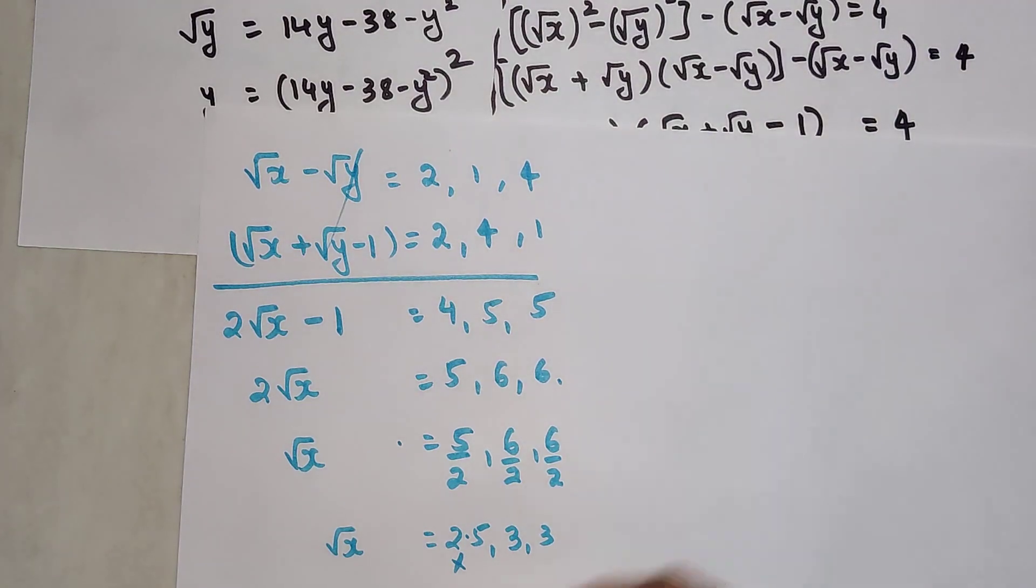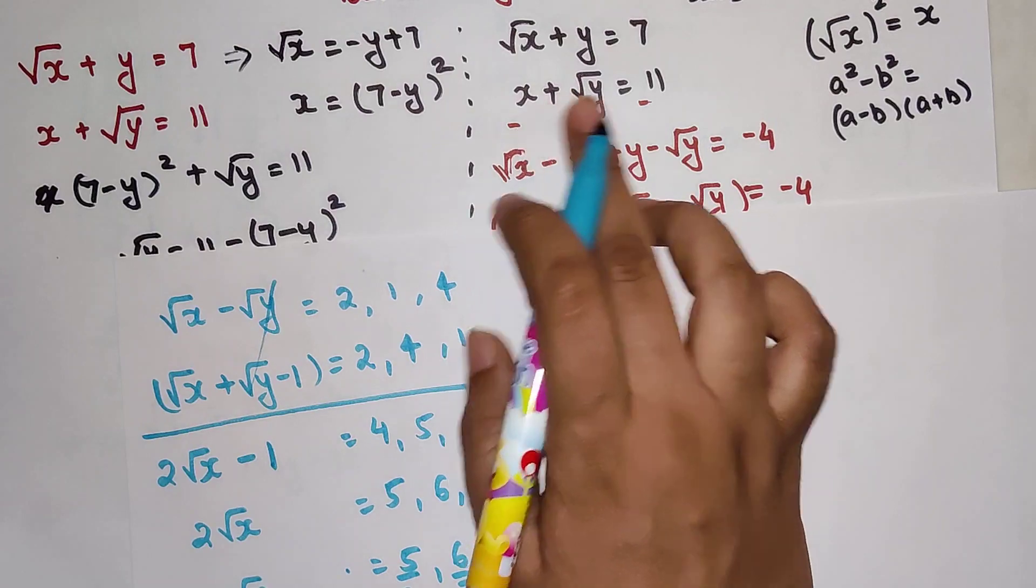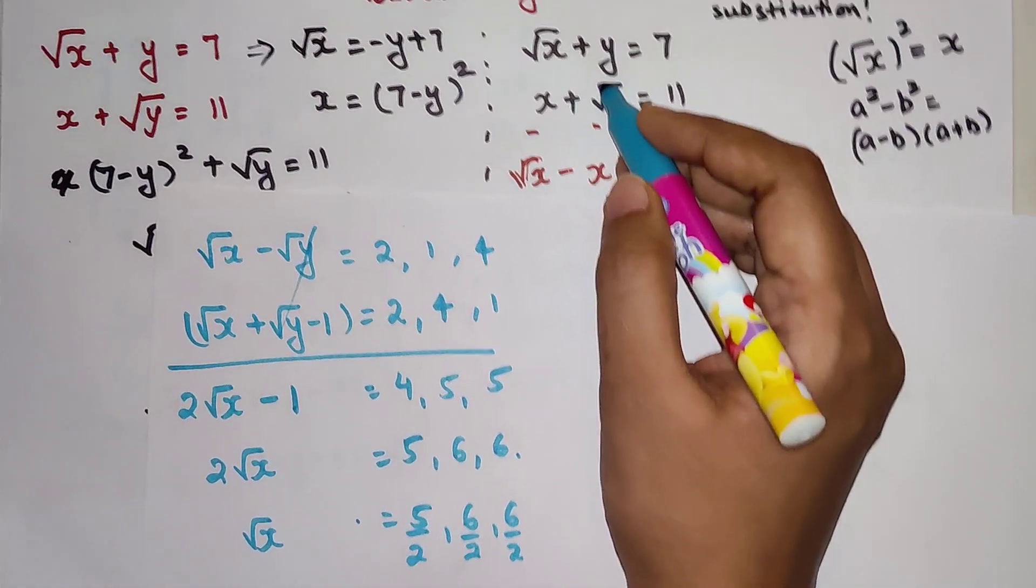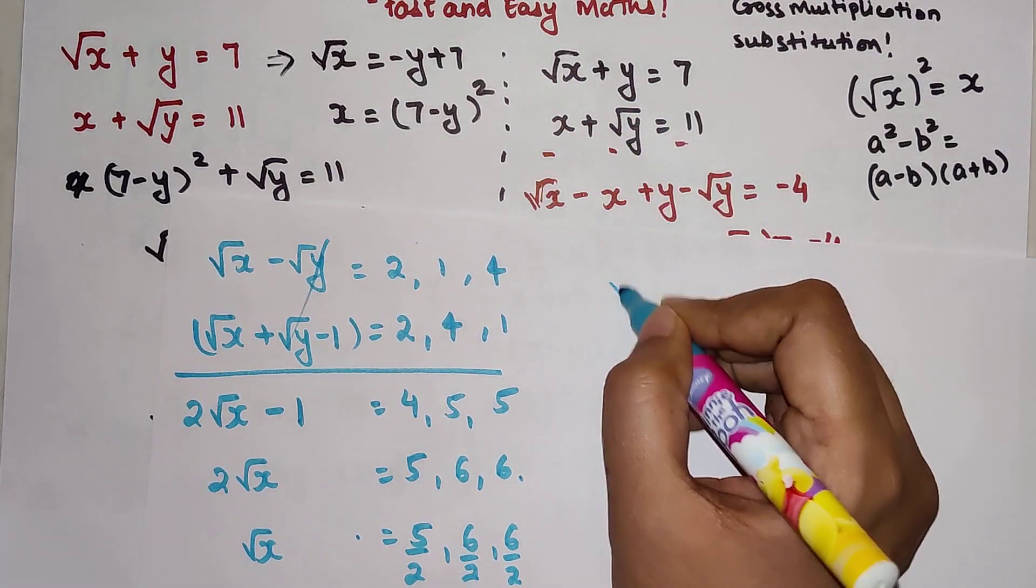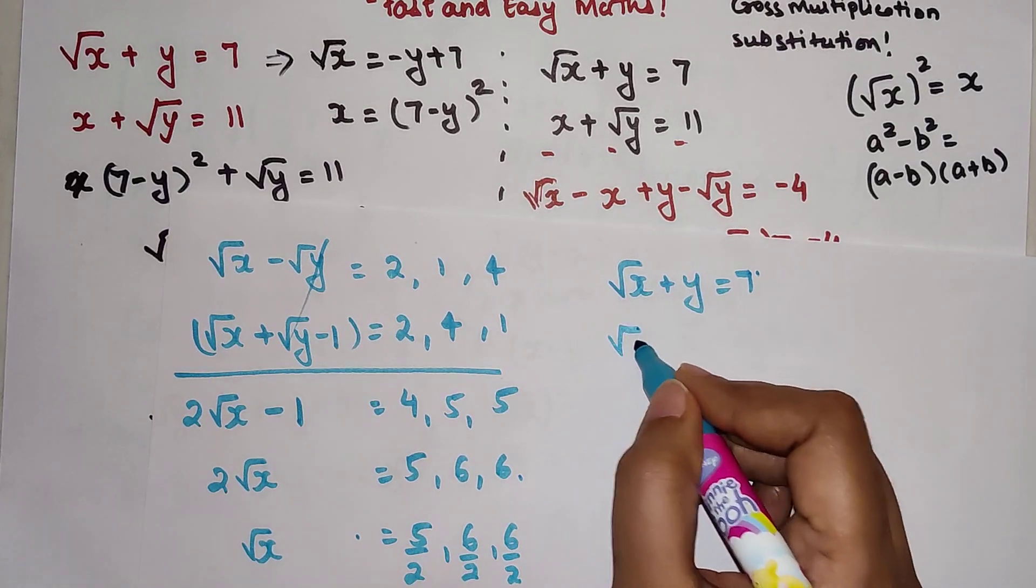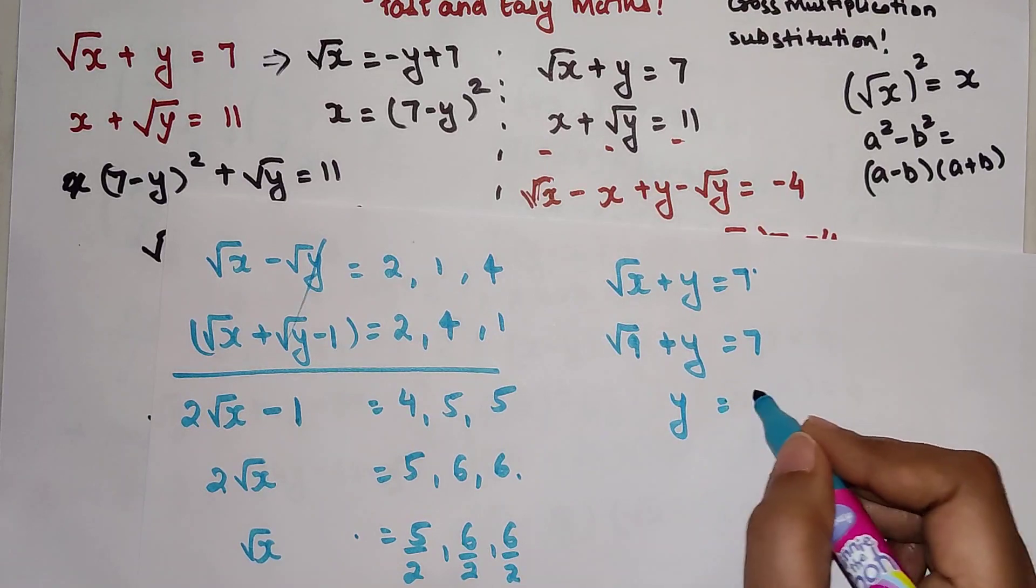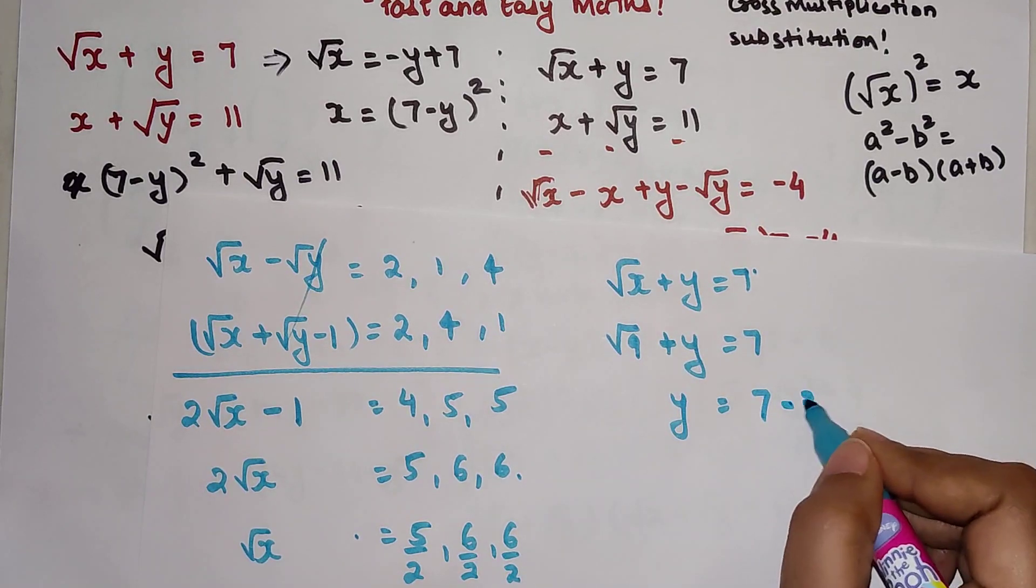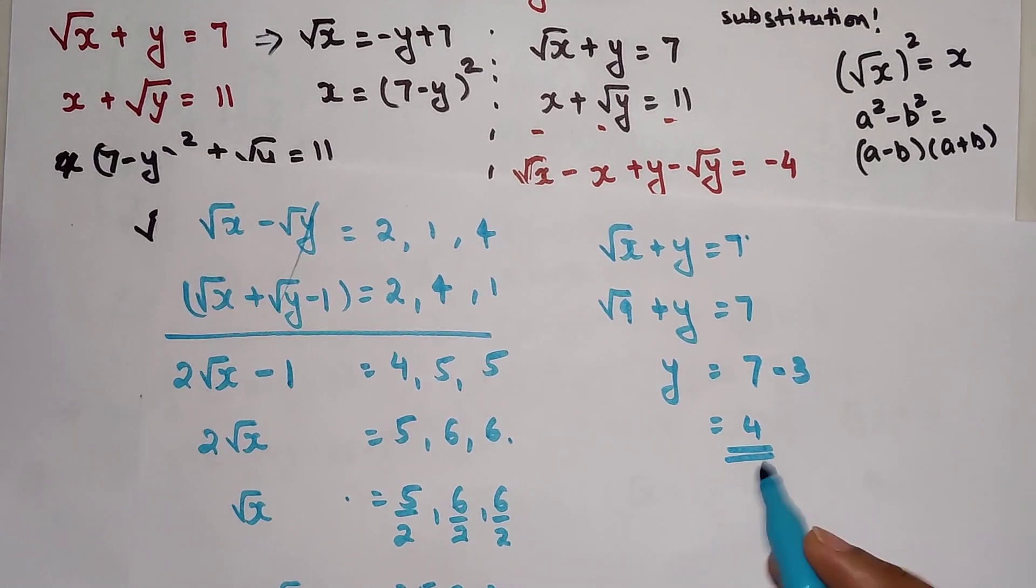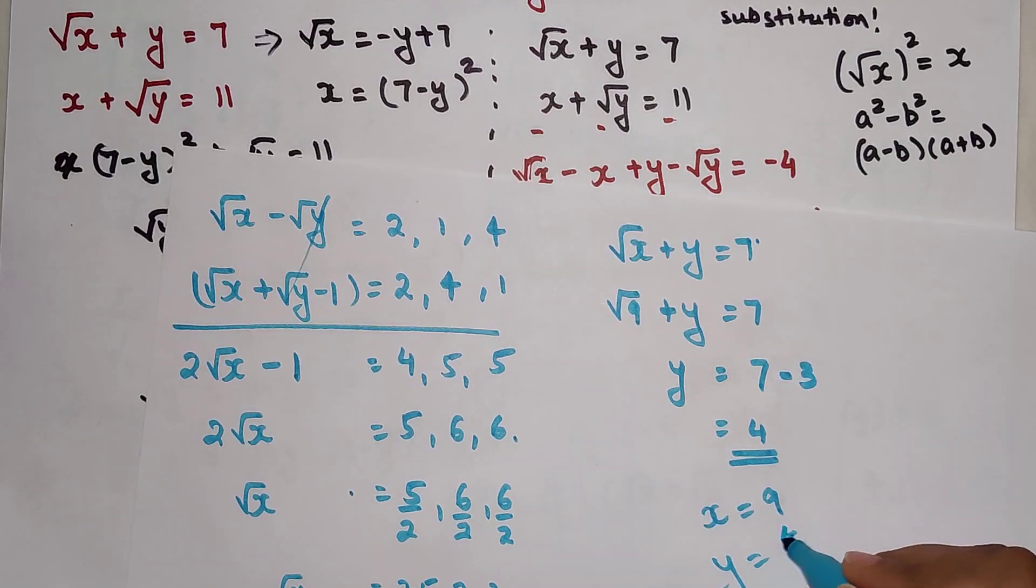Putting the value of x in the original equation root x plus y equals 7. This is root of 9 plus y equals 7. So y equals 7 minus 3, y equals 4. This way we have found the value of x as 9 and the value of y as 4.